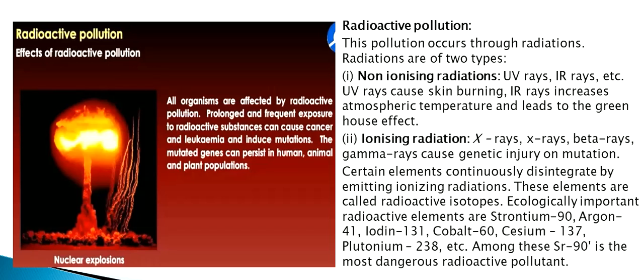Radioactive pollution occurs through radiations, which are of two types. First, non-ionizing radiation: UV rays and IR rays. UV rays cause skin burning; IR rays increase atmospheric temperature and lead to the greenhouse effect. Second, ionizing radiation: X-rays, beta rays and gamma rays cause genetic injury or mutation.